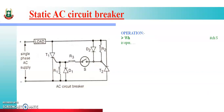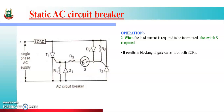Now, if we need to break the circuit, we open the switch. When the load current is required to be interrupted, the switch is opened. This results in the blocking of gate current to both SCRs. With the switch open, neither T1 nor T2 can receive gate current. Hence, both SCRs are turned OFF. With both SCRs OFF, current to the load stops — the load current is interrupted.